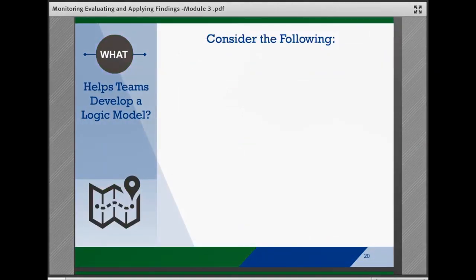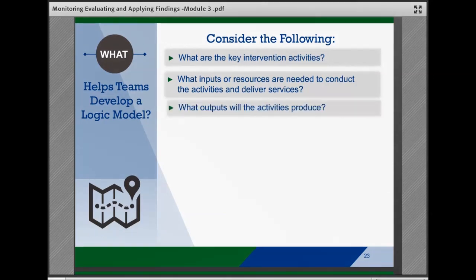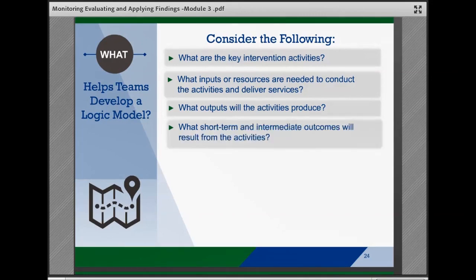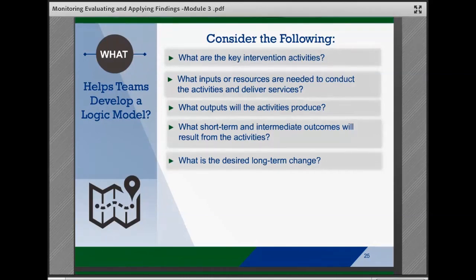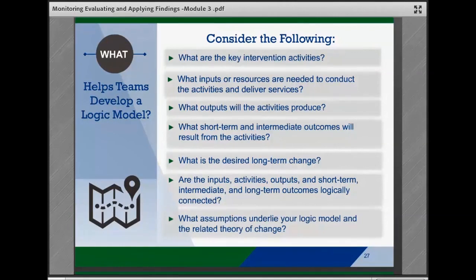Teams should brainstorm together around the following questions to develop their logic model: What are the key activities of the intervention? What inputs, materials, or resources are needed to conduct the activities and deliver services — does the team have what they need, or are there gaps? What outputs will the activities produce, including counted outputs and product outputs such as the number of staff trained or new guidelines? What short-term and intermediate outcomes will result? What is the desired long-term change? Are the inputs, activities, outputs, and outcomes logically connected? And what assumptions underlie the logic model and the related theory of change — for example, an assumption about the number of service recipients or that all staff will complete the training?